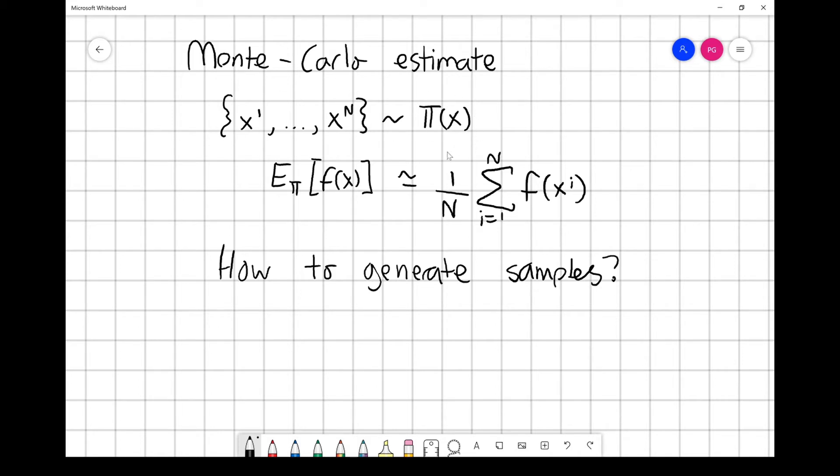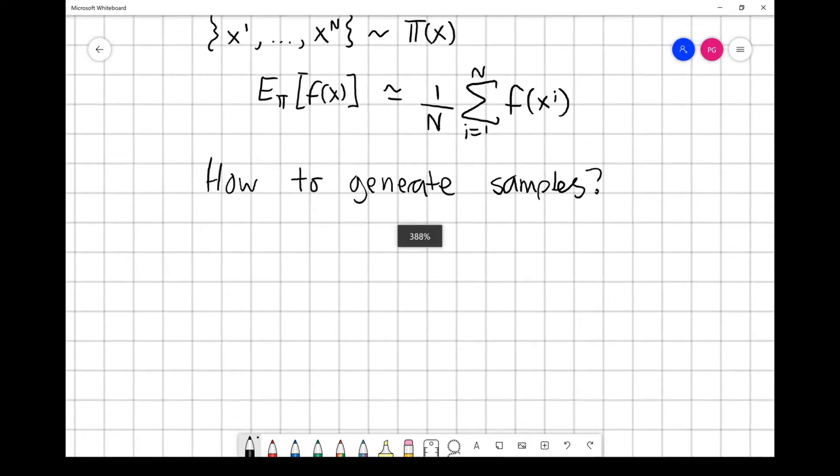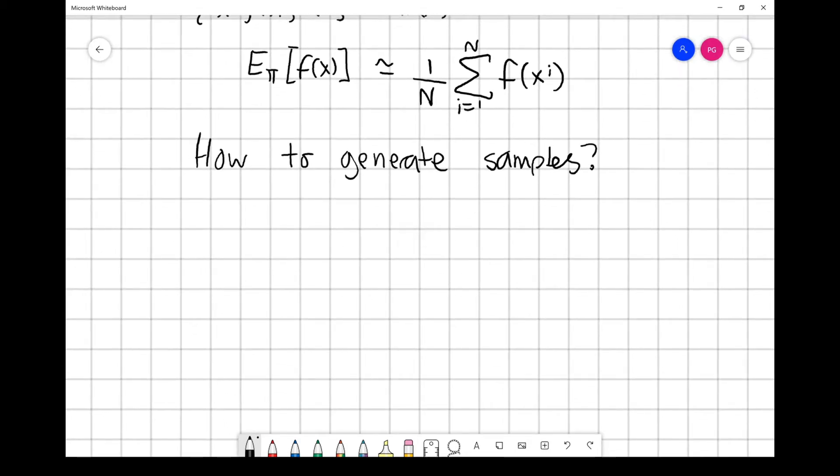If π(x) is something standard like a Gaussian or a Poisson, then there are set ways for generating samples from them. But if it's something non-standard, then you'll have to turn to something else. Probably the most well-known approach to generating samples from a generic probability distribution is Markov chain Monte Carlo.